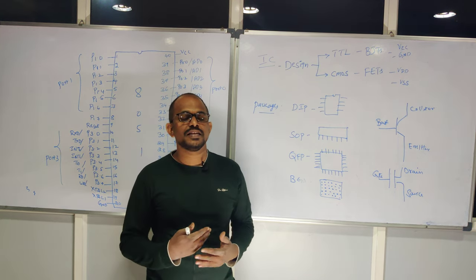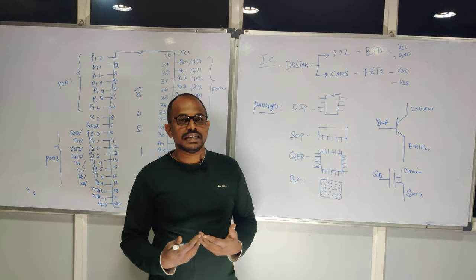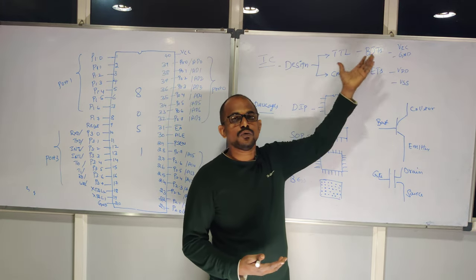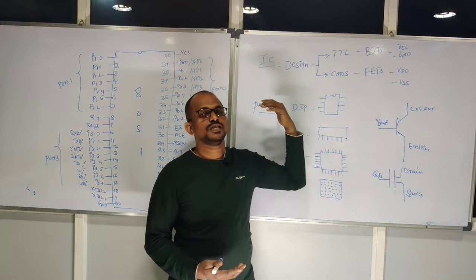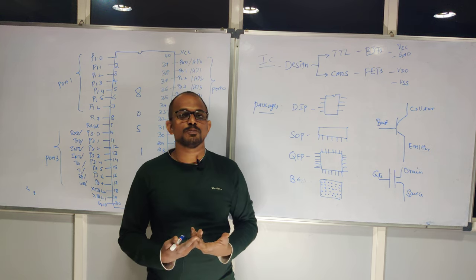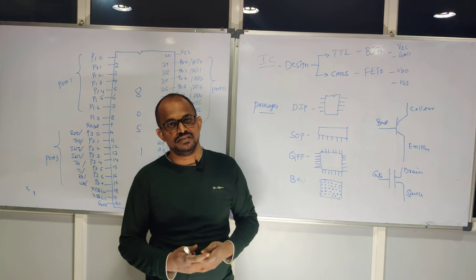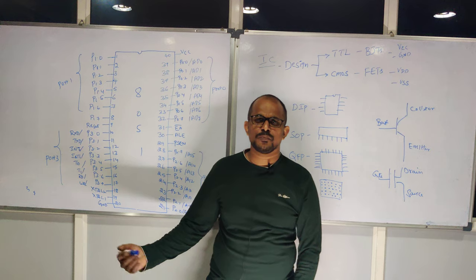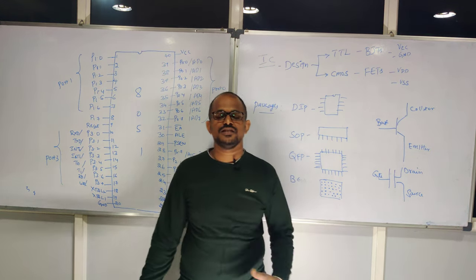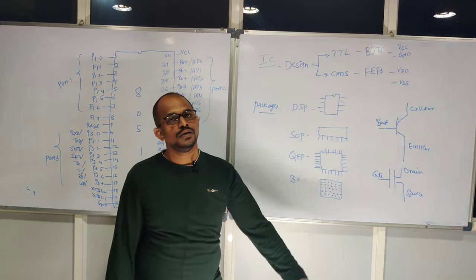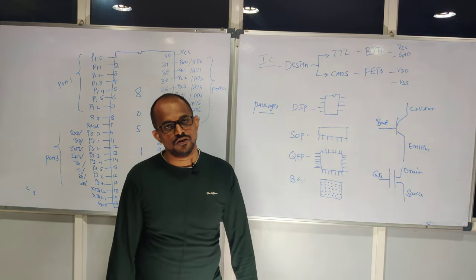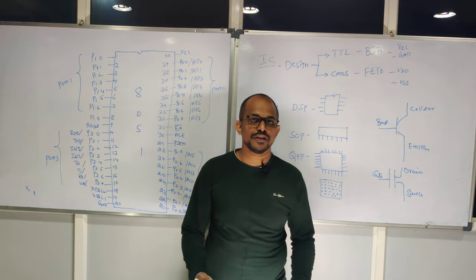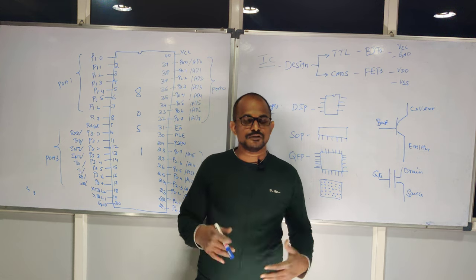In TTL technology, ICs have power supply pins VCC and ground. In CMOS technology, the IC has power supply pins VDD and VSS. This is a simple way to identify the technology. There is no need to go in depth about IC design — that belongs to VLSI technology. As embedded developers, we use the outcome of VLSI technology, which is the IC.